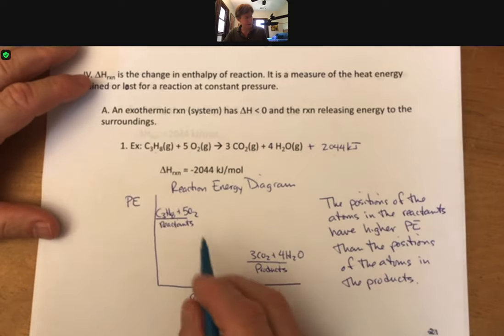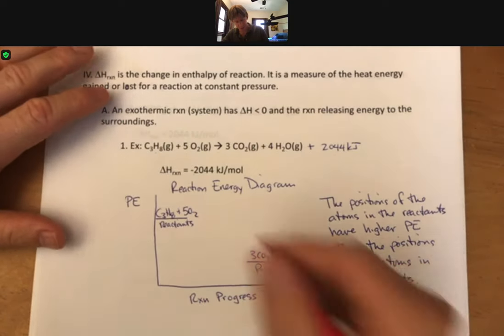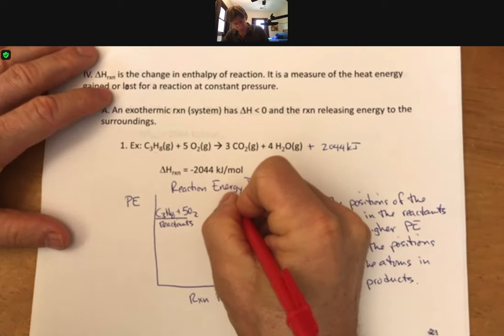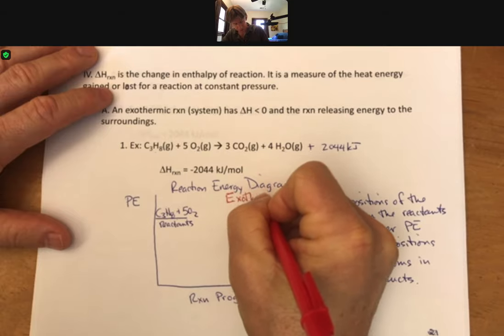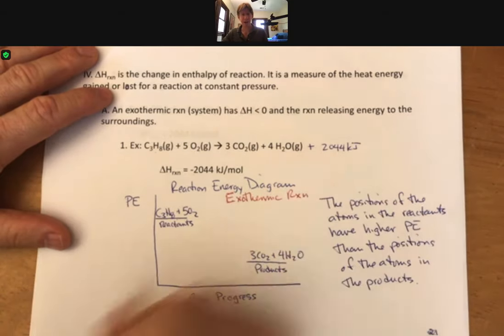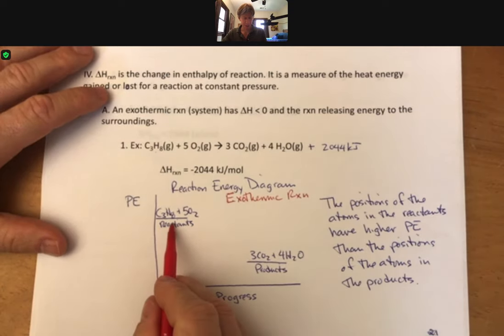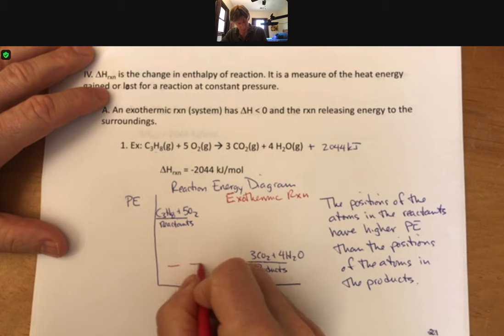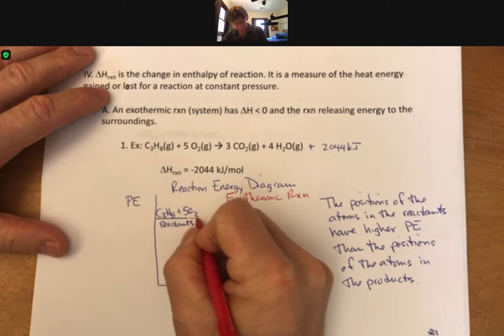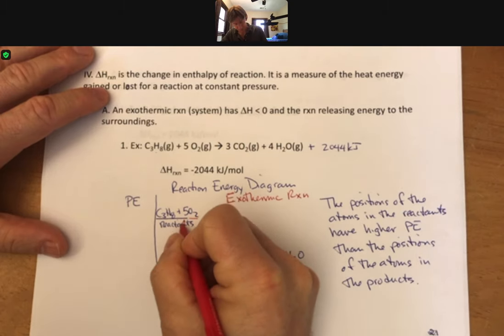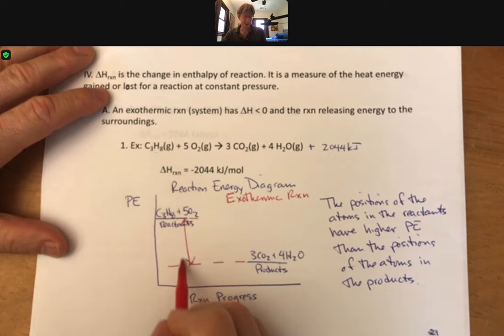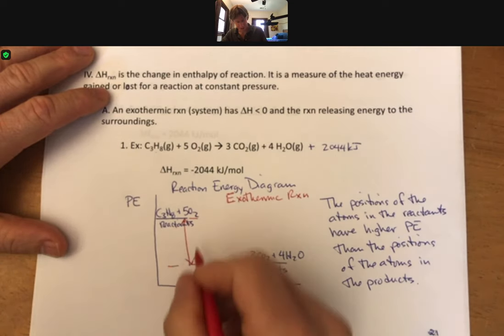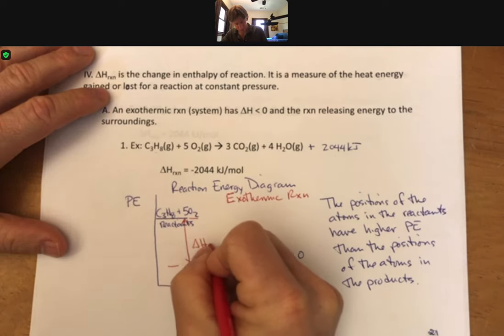And this is a specific reaction energy diagram for an exothermic reaction. And for an exothermic reaction, the reactants are higher than the products. And we'll do one more thing.